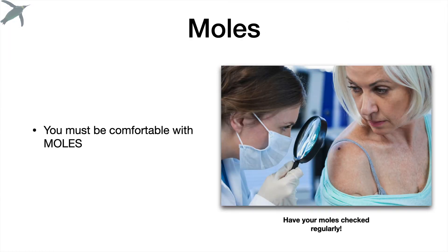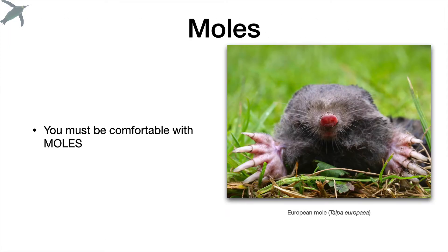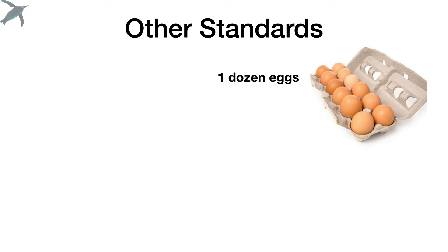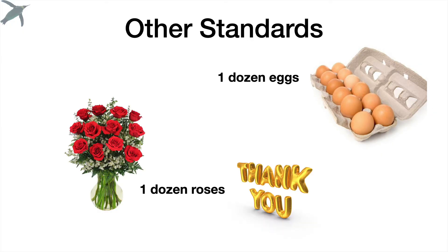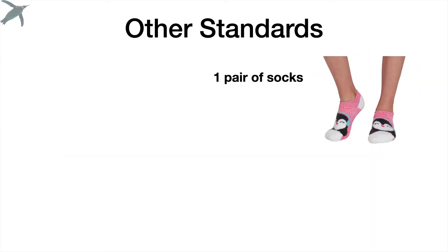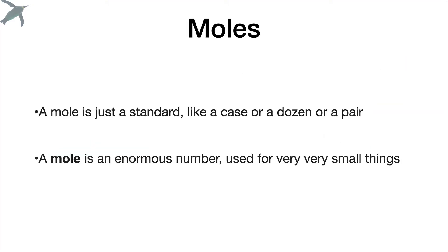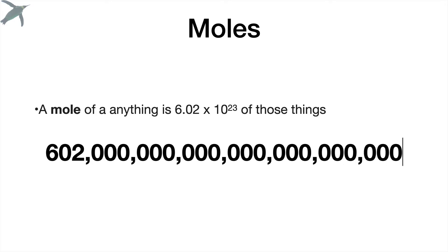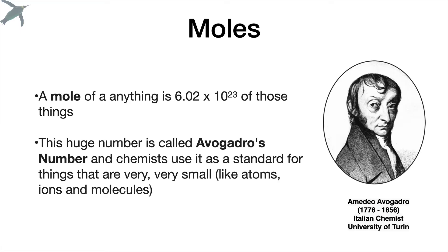We're going to start with moles — not skin moles, get those checked, and not the animal either. A mole is a standard. It's just shorthand for a huge number, like other standards you know: a dozen, a pair, a pair of socks, a case of beer. Moles are just like that. It's just that it's an enormous number — shorthand for 6.02 times 10 to the 23rd. That's a huge number. We call that Avogadro's number.